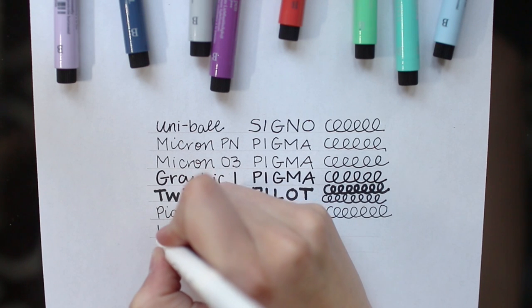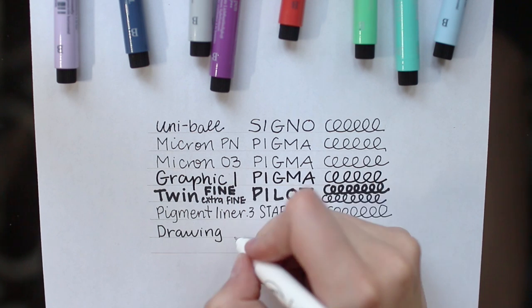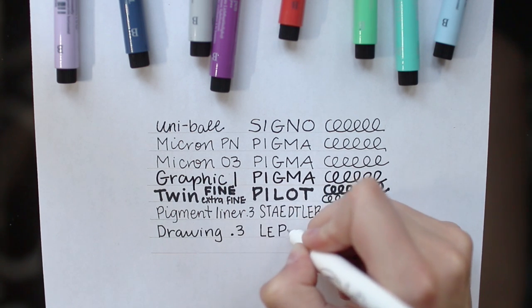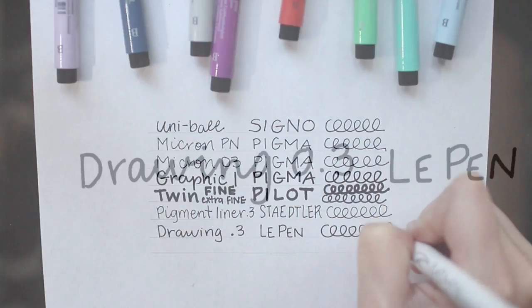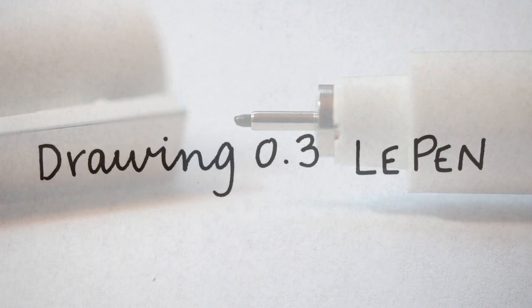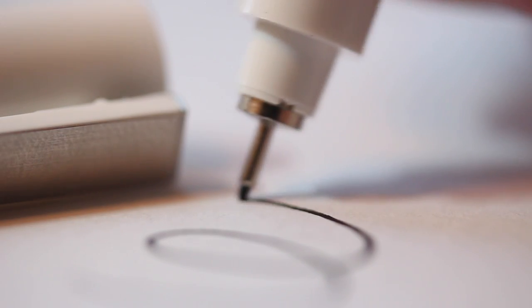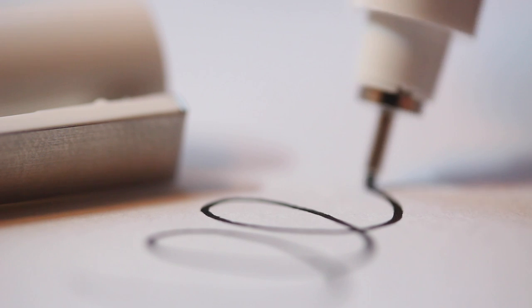Next we have the Le Pen Technical Drawing Pen by Marvy. It's got a 0.3 millimeter tip and I found a lot of similarities to the Pigma ink pens. The ink is very similar, however the pen tip is actually felt as opposed to plastic. This makes lettering a little easier because it feels softer on the page, but I did notice that if you try to write really quickly the ink has a little trouble keeping up and it can come off a little patchy.